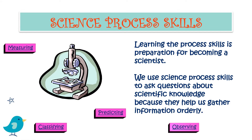What are the science process skills? Learning the process skills is preparation for becoming a scientist. We use science process skills to ask questions about scientific knowledge because they help us gather information in an orderly way. Some of them are measuring, classifying, predicting, and observing.